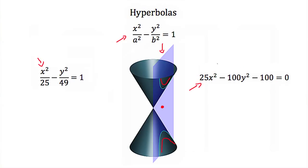Even though that equation is not written in standard form, there are clues that tell us it is a hyperbola. First, both x and y are squared, so this could be a circle, an ellipse, or a hyperbola. Next, the coefficients of the x and y terms are different, so this cannot be a circle. But notice that these coefficients have different signs — they are being subtracted — and that is the clue that this is the equation of a hyperbola.